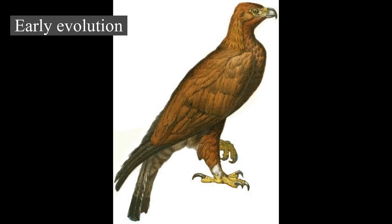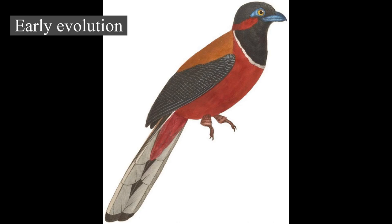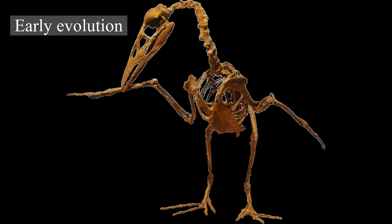The oldest known Paravian and probably the earliest Avialan fossils come from the Tiaojishan Formation of China, which has been dated to the late Jurassic period Oxfordian stage, about 160 million years ago. The Avialan species from this time period include Anchiornis huxleyi, Xiaotingia zhengi, and Aurornis xui. The well-known probable early Avialan, Archaeopteryx, dates from slightly later Jurassic rocks, about 155 million years old, from Germany.